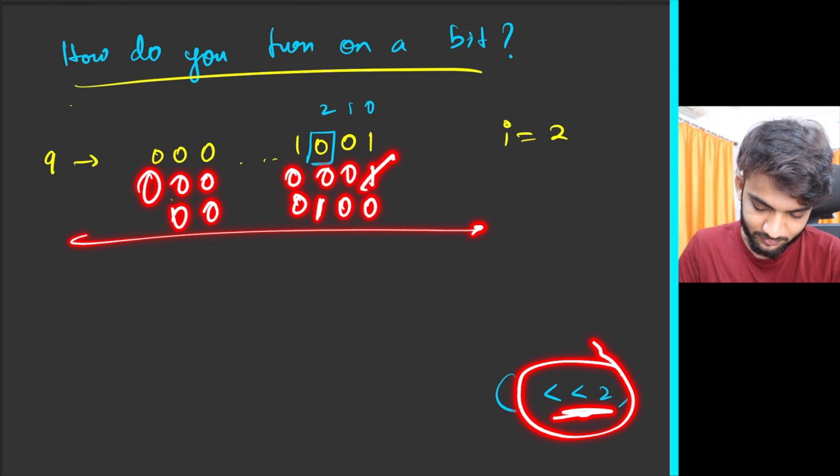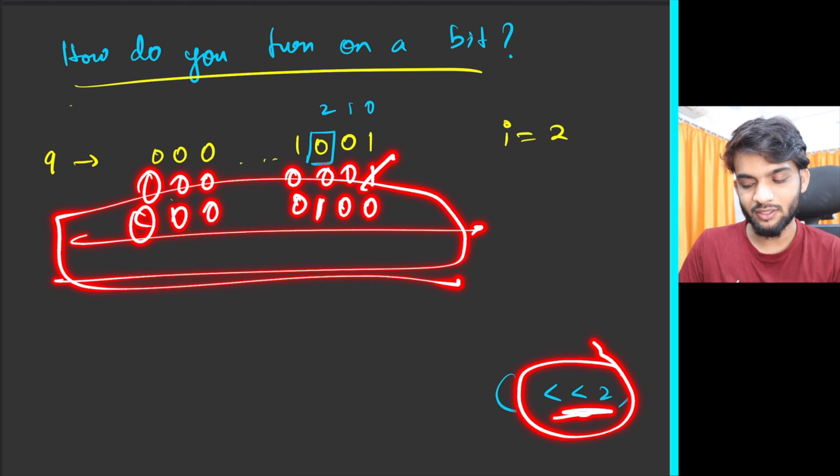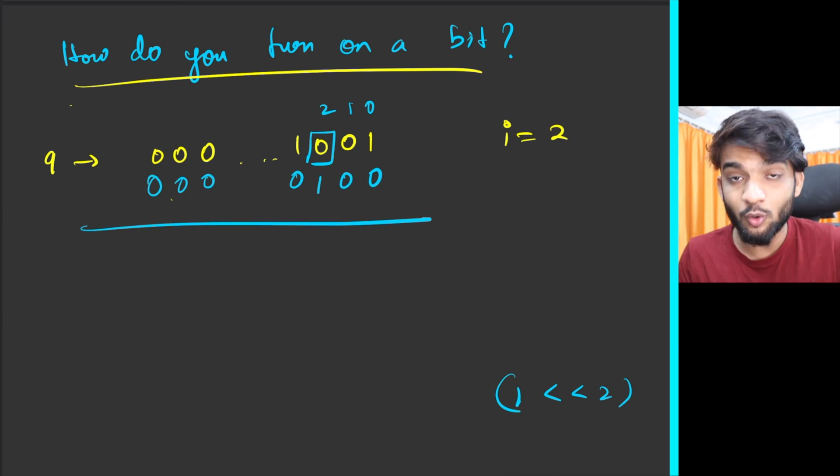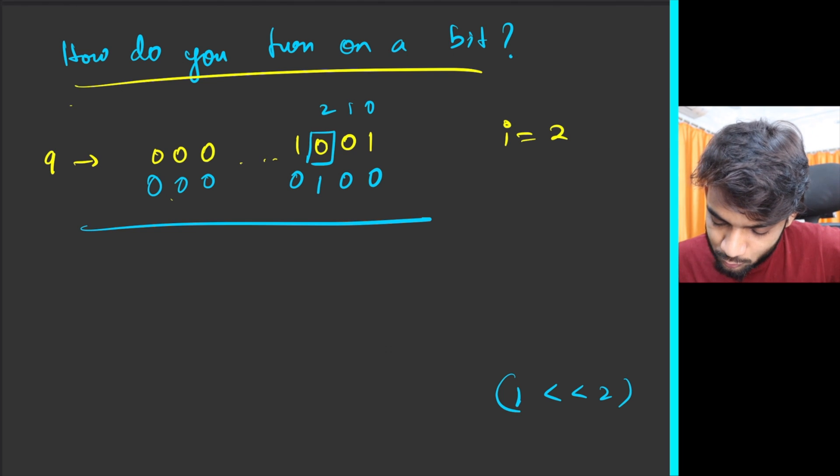Ideally, what is one? One is 000...0001. The moment you say left shift by two, this one will left shift by two places and come over here and these guys will be zeros again. Whenever I say left shift of two, it left shifts by two positions.